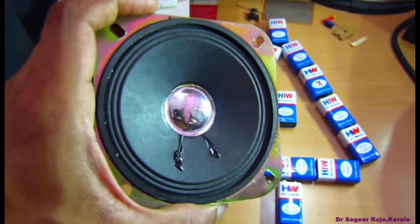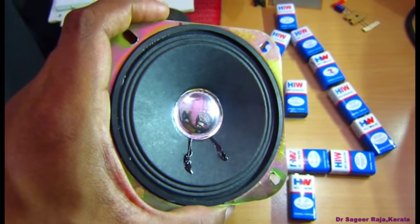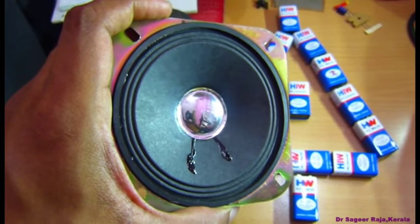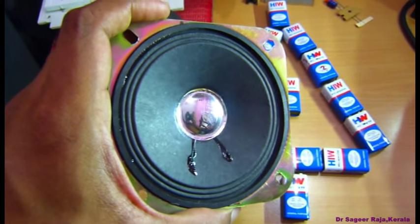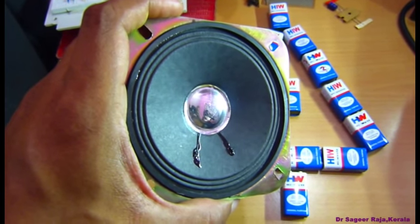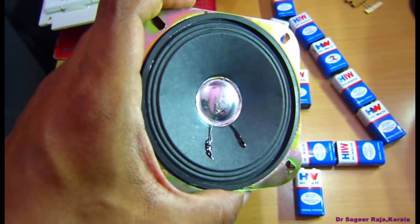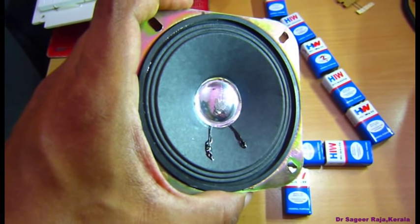This 5 watt 8 ohm speaker will become the output device of the LM386 mono amplifier IC board. I will connect this speaker in series with the output 1000 microfarad capacitor.